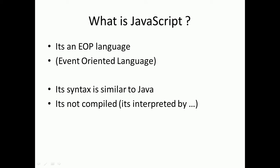JavaScript is an event-oriented programming language, it's EOP. Its syntax is similar to Java. It's not compiled, it's interpreted by the browser, so the browser interprets the JavaScript and you can run the code.